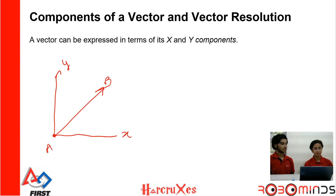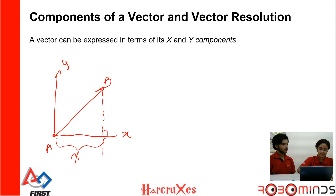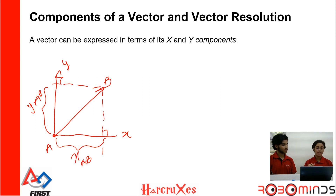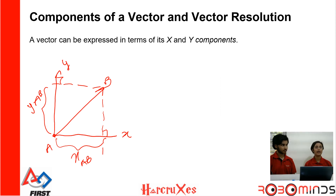To find the components, draw perpendiculars from the head of the vector to the x and y axes. The projection onto the x axis is the x-component, which we call x_AB. The projection onto the y axis is the y-component, y_AB. This process is called vector resolution — resolving vector AB into its x and y components. Every vector can be resolved this way, because any vector will always have some part in the x and y directions.